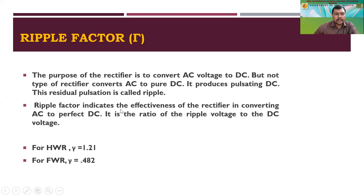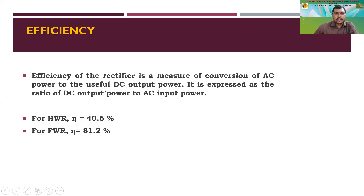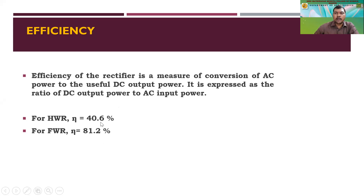The efficiency of a rectifier is a measure of conversion of AC power to useful DC output power. It is expressed as the ratio of DC output power to AC input power. For a half wave rectifier, efficiency is 14.6%. Since we use two diodes at a time in the full wave and bridge rectifier circuit, efficiency is approximately twice that of the half wave rectifier, coming out to around 81.2%.